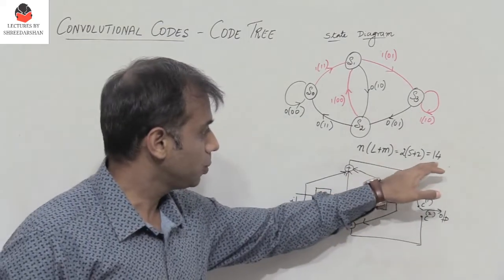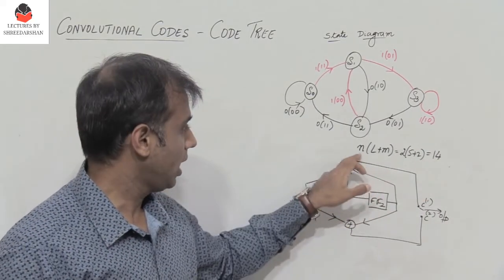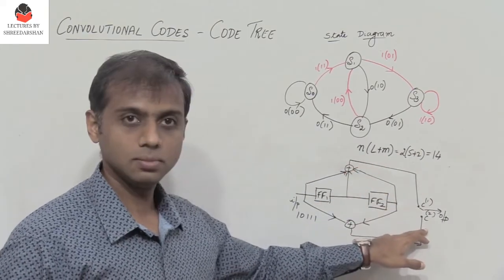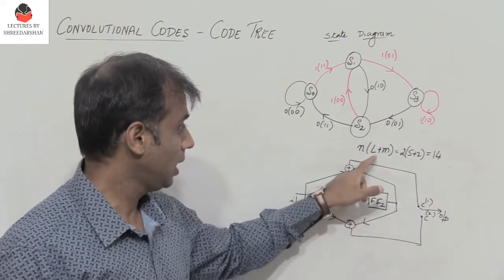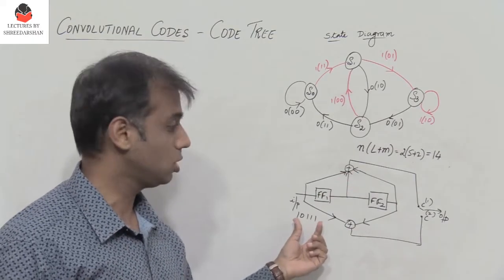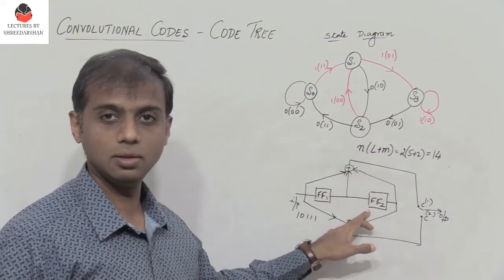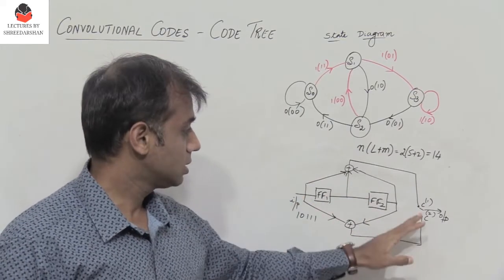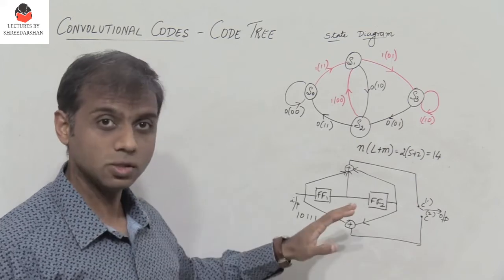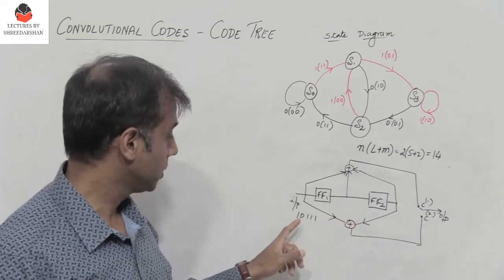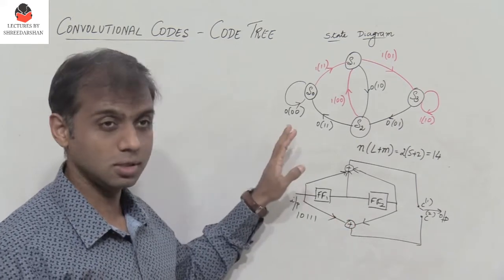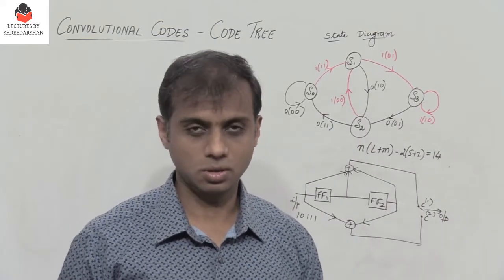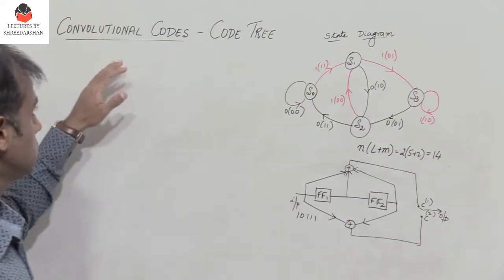The output is 14 bits, where the output length is n times (l plus m), where n equals 2 because there are two outputs, l is the length of the input 10111 which is 5, and m equals 2 which is the number of flip-flops. Considering the same convolutional encoder with the same input, we had written the state diagram and the state transition table — the link is given in the description as lecture 3 under convolutional codes.